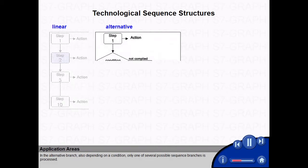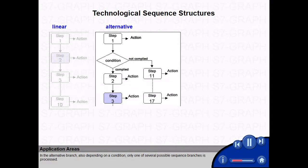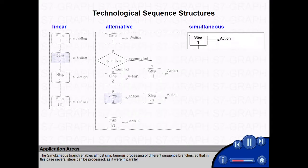In the alternative branch, also depending on a condition, only one of several possible sequence branches is processed. The simultaneous branch enables almost simultaneous processing of different sequence branches.